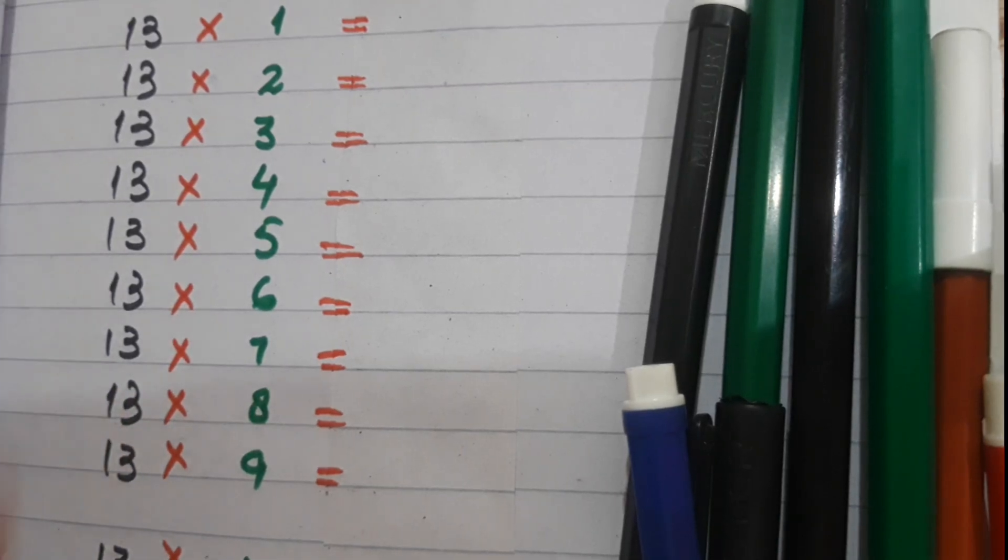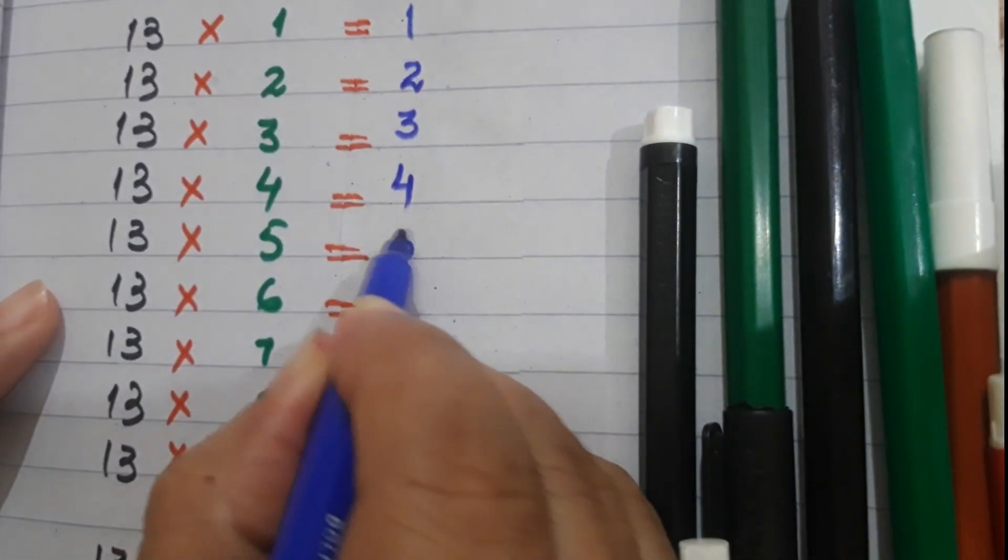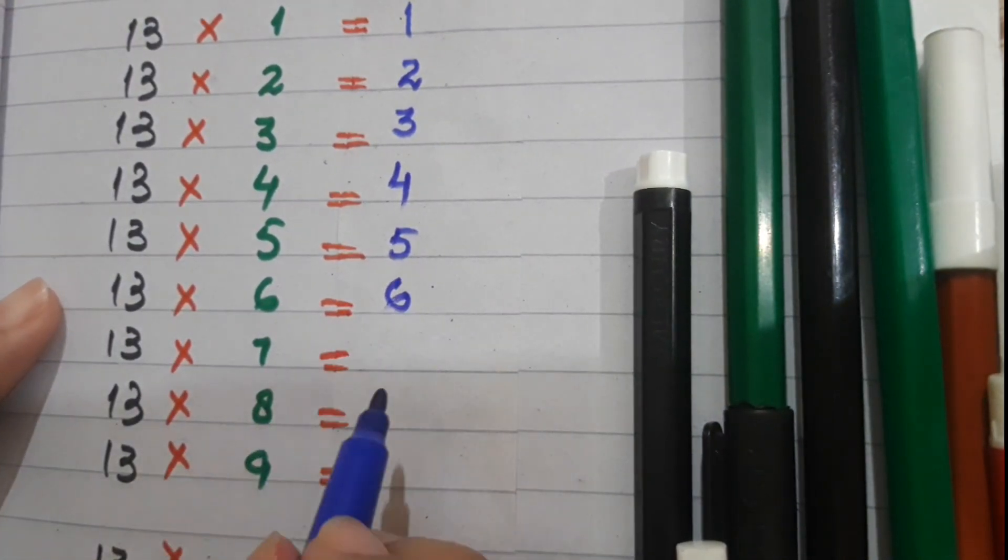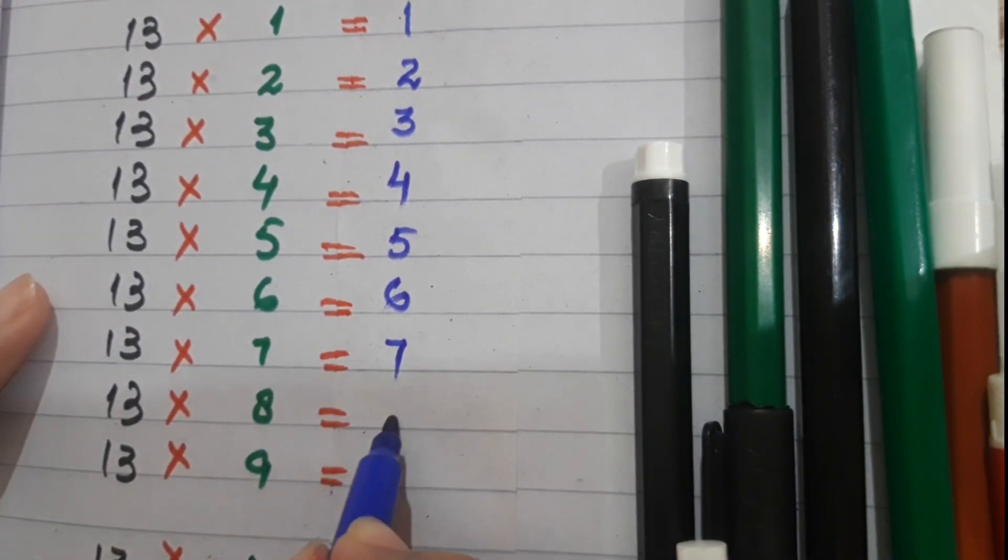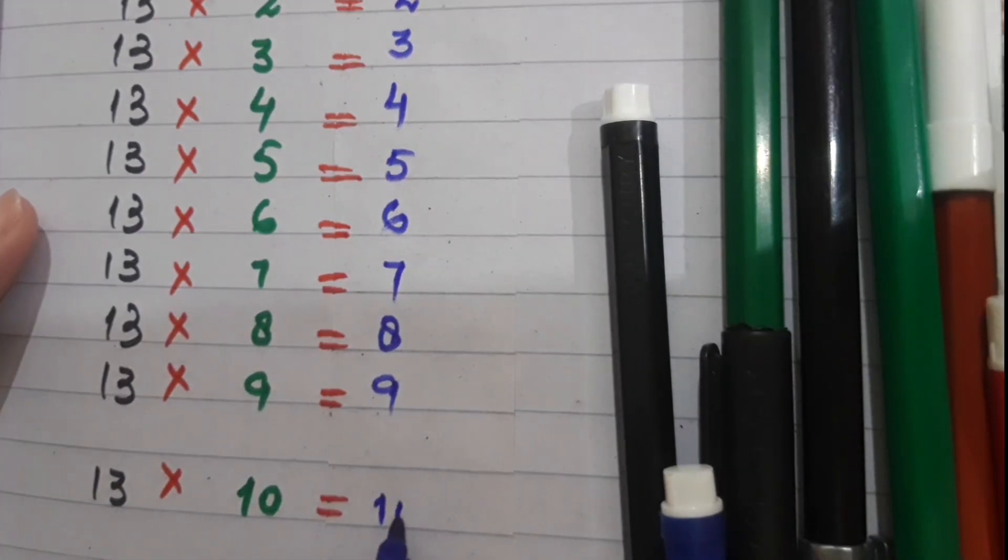Then what we will do here friends, we will write the counting from 1 to 10. So we will write ascending order counting: 1, 2, 3, 4, 5, 6, 7, 8, 9, and 10.